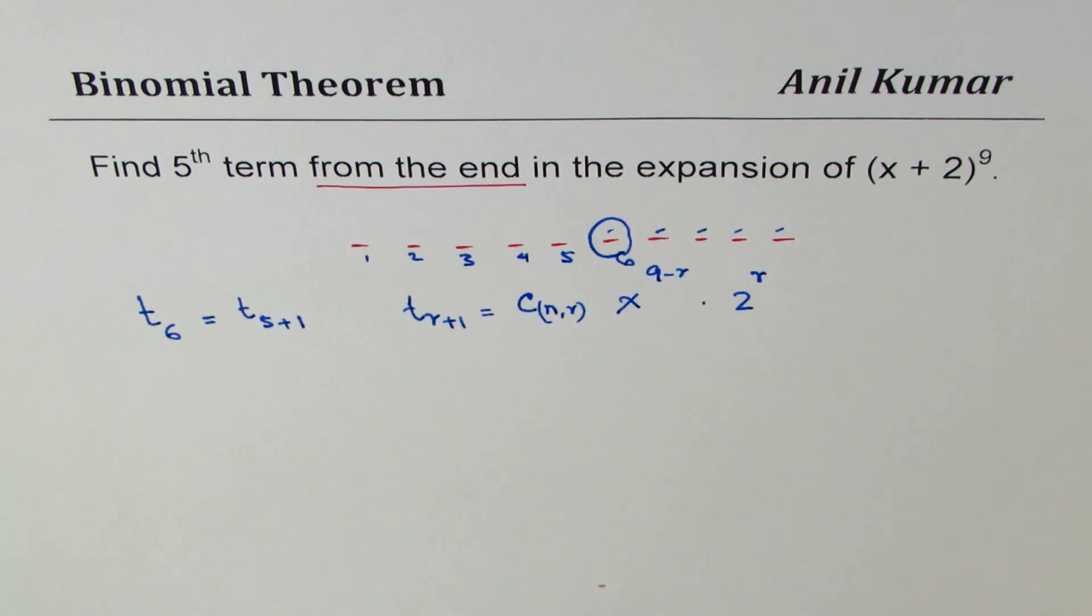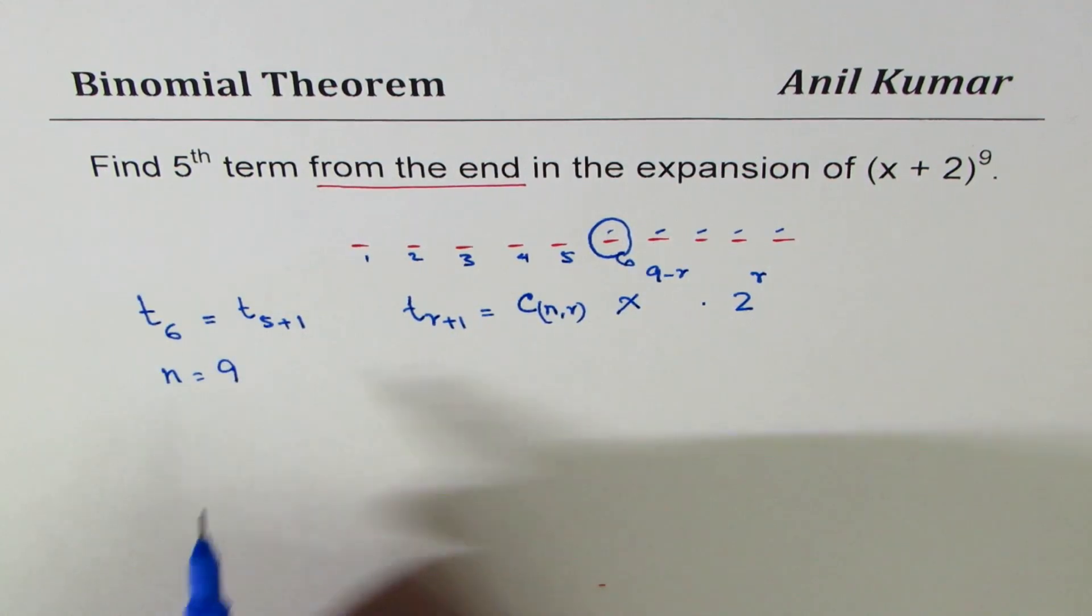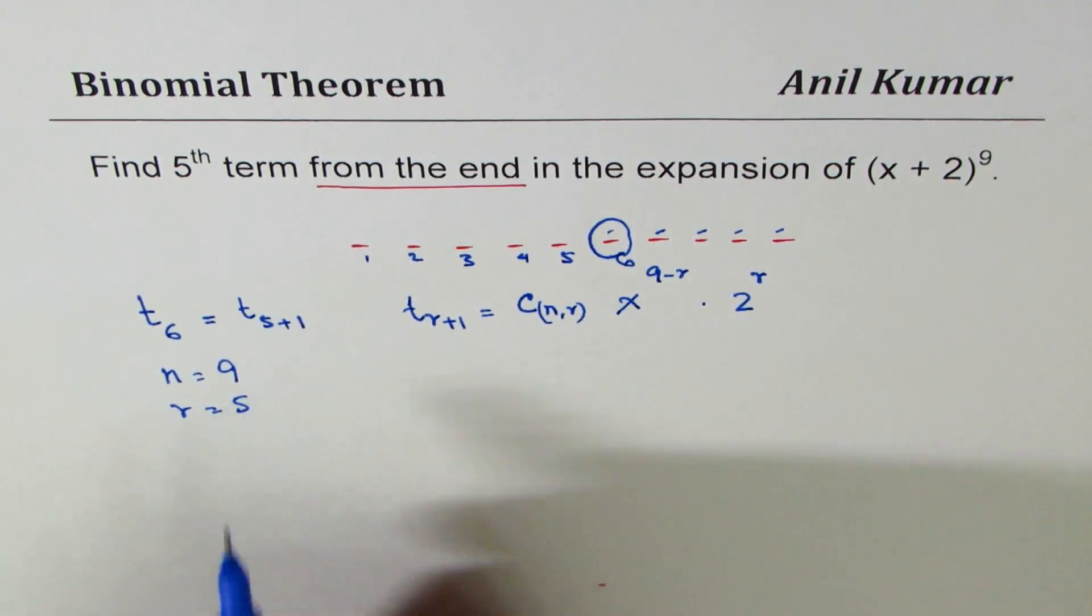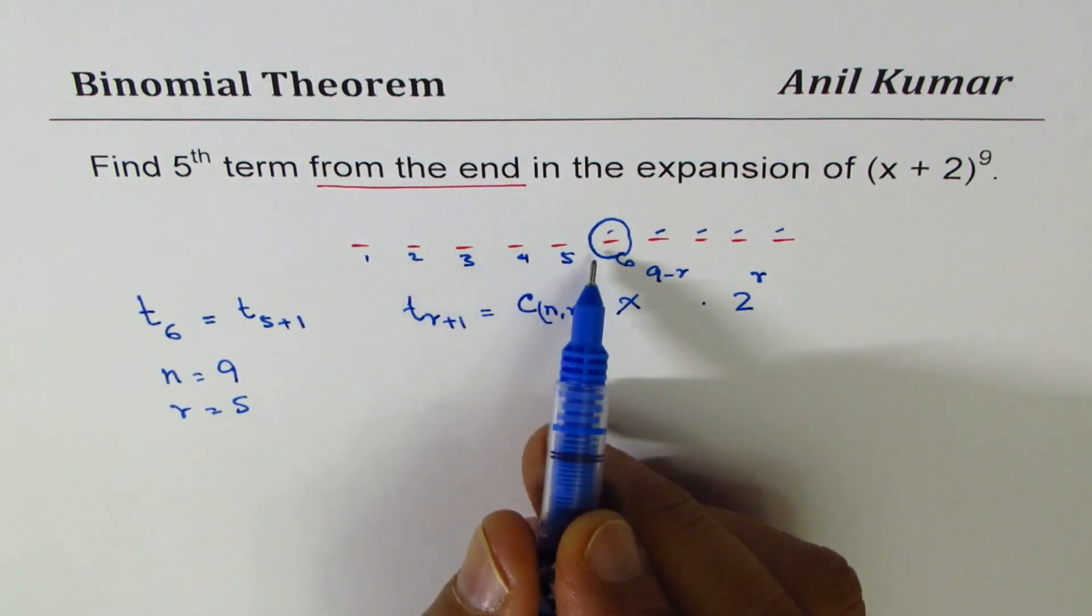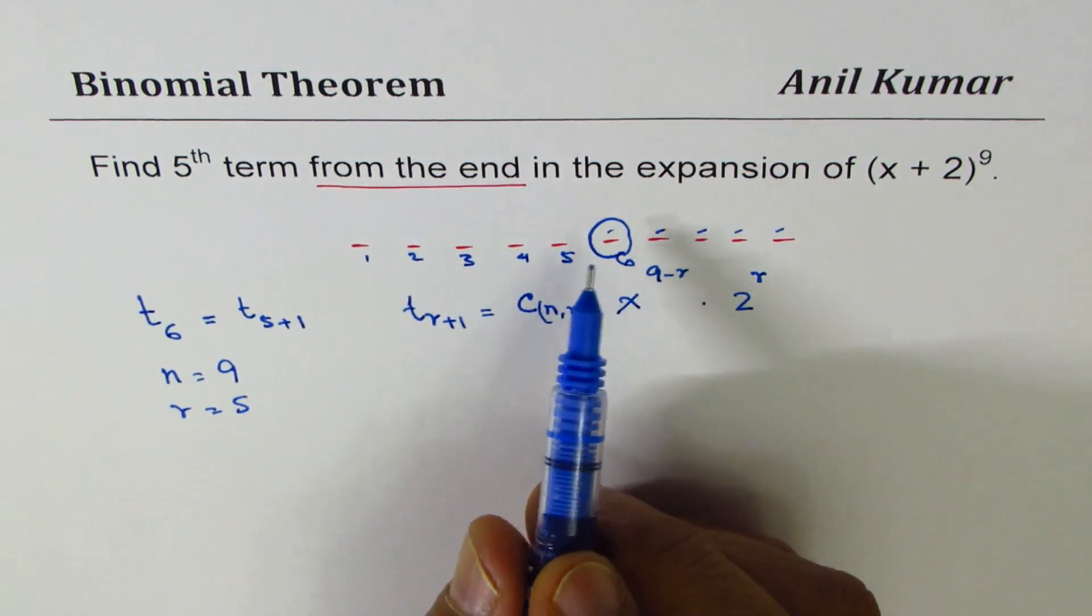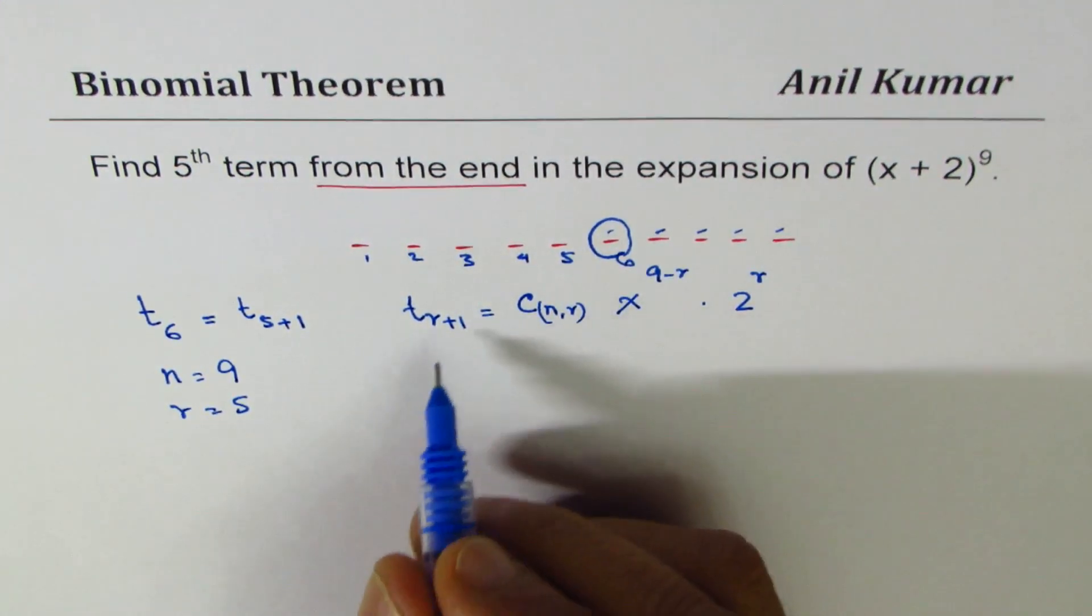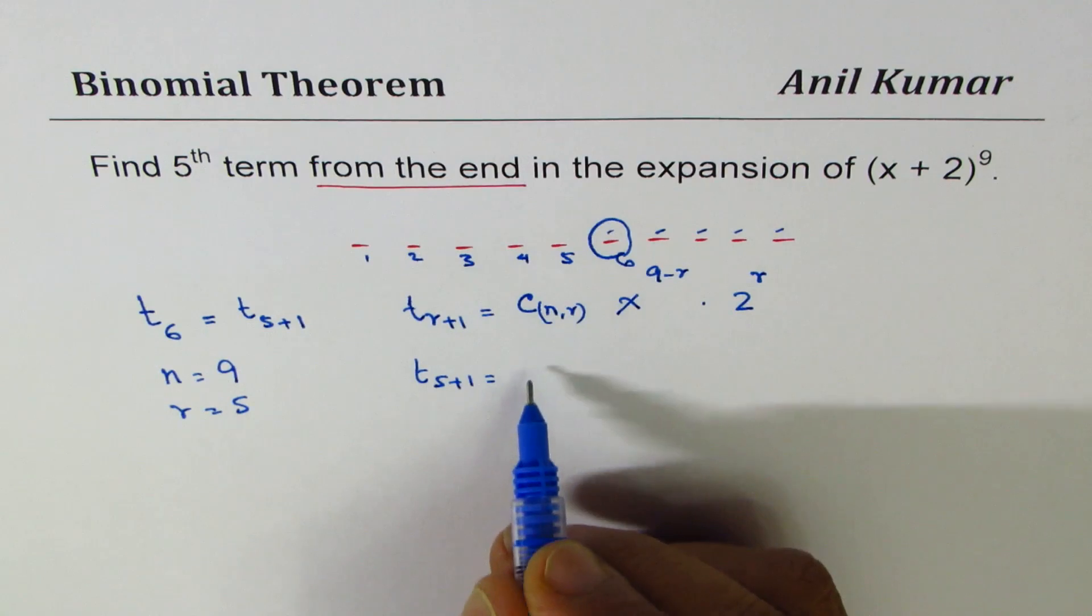Now in the given expression we know n is equal to 9 and r is equal to 5, since we are interested in sixth term from the beginning which happens to be also the fifth term from the end. So let's figure this out.